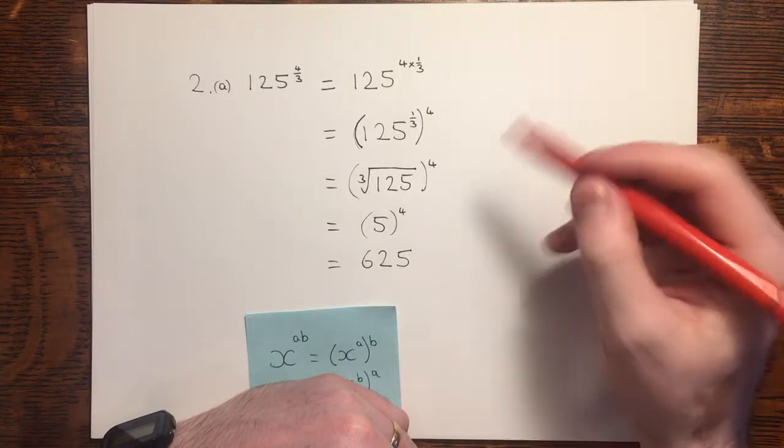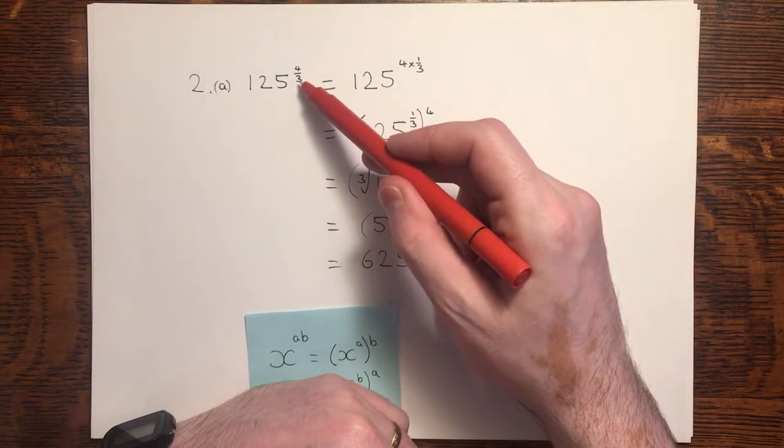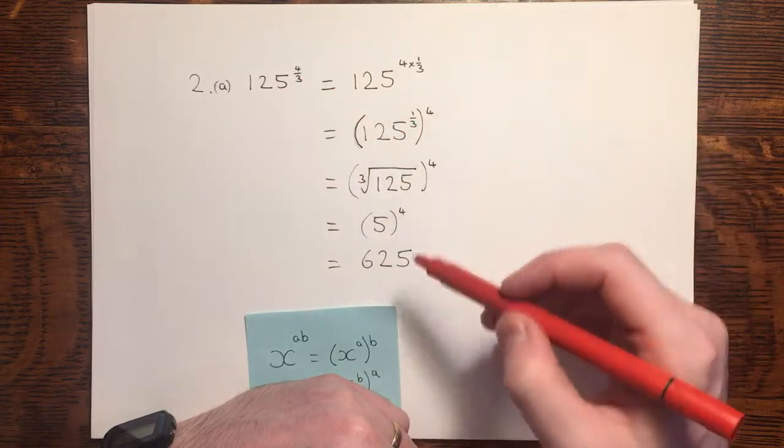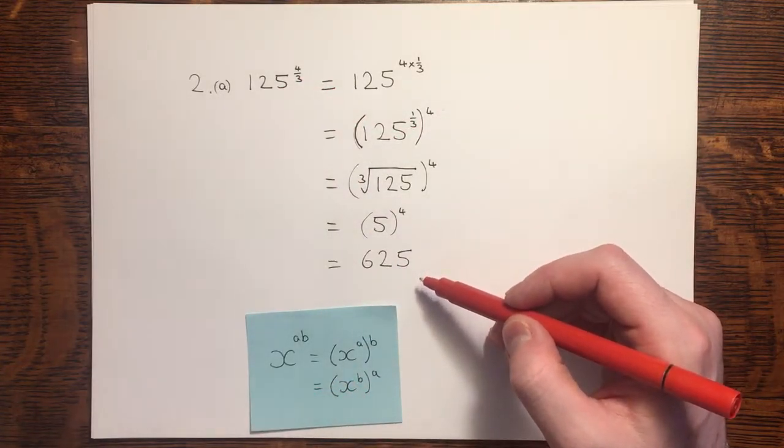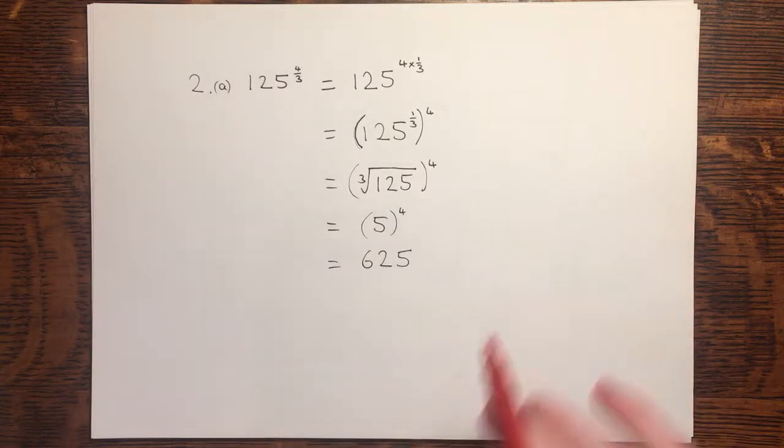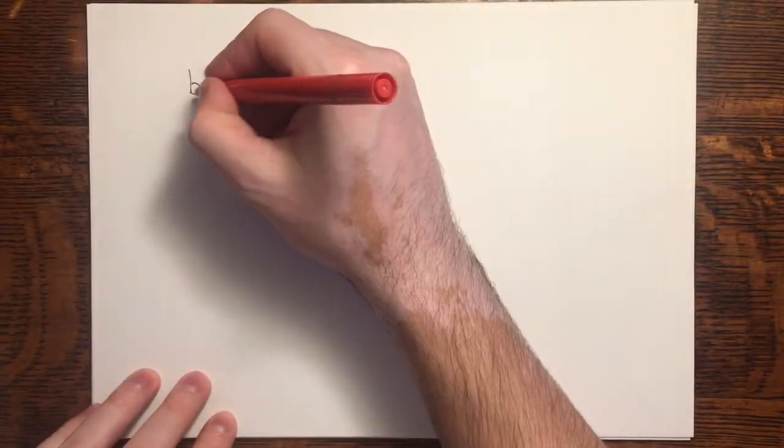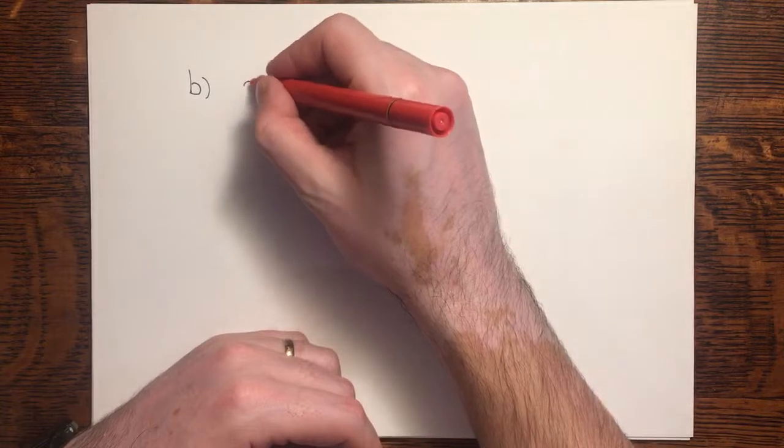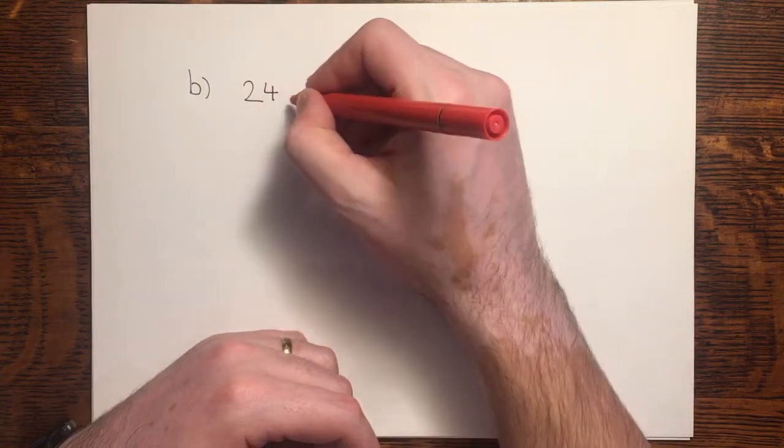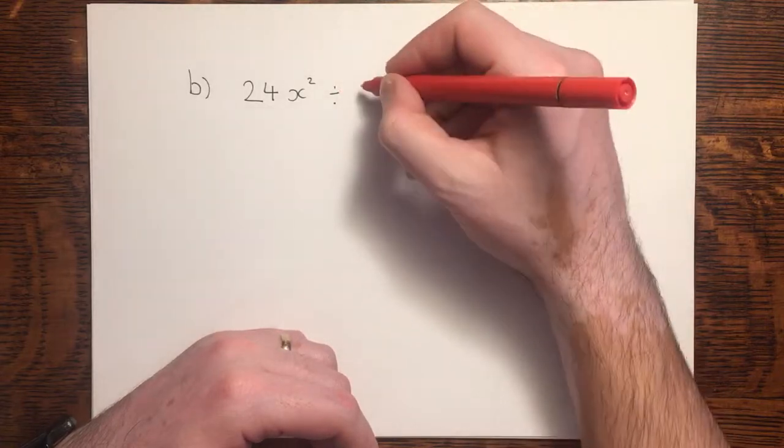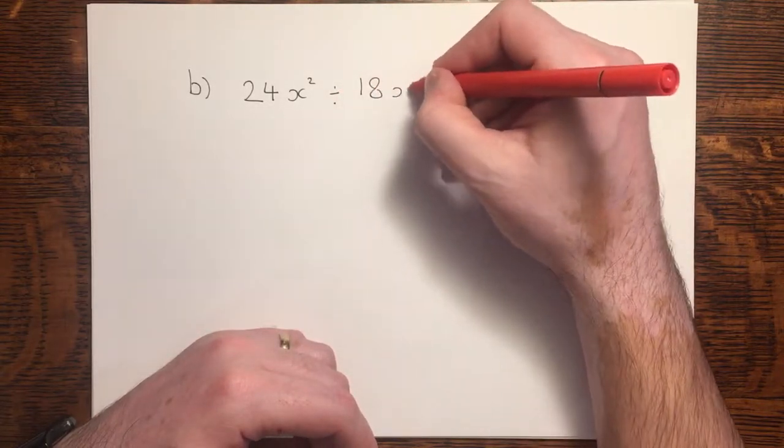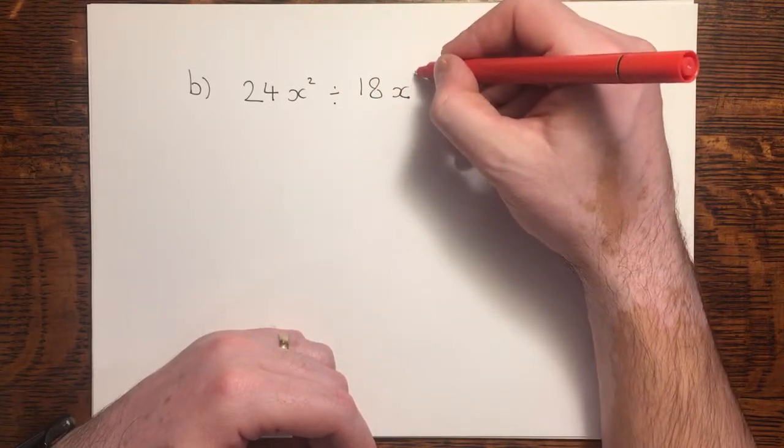So there we've got 4 thirds as a power of 125 gives us 625. That's part A complete. Now let's look at part B. In part B, we're asked to simplify 24x squared divided by 18x to the power of 4 thirds.